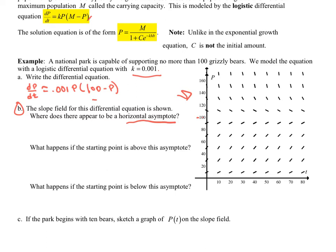What if the starting point is above the asymptote? So for instance, it's up here. What's going to happen? Well, you can probably see that I'm going to be approaching my horizontal asymptote as I go here. So I'm going to be going to 100 bears. What happens if the starting point is below this asymptote? Same thing, except we're going to be growing, and we're going to be approaching like this.